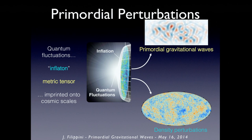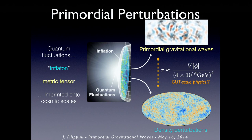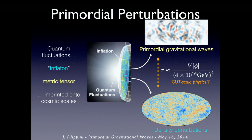If you see this, not only is it a unique signature that inflation happened, but numerically, if you know the amount of power in the gravitational waves and the amount of power in the density perturbations that we've seen, the ratio — the tensor to scalar ratio R — is a measure of the energy scale at which inflation occurred. So this is what we're looking for; this is what's so exciting.